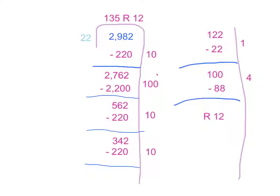I ended up with 2,762. Then I took away 2,200, and if I take away that much, it's one hundred 22s in there.